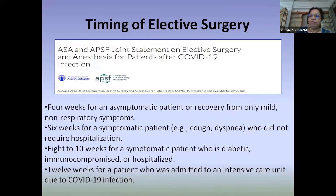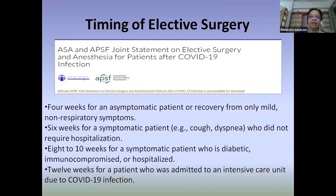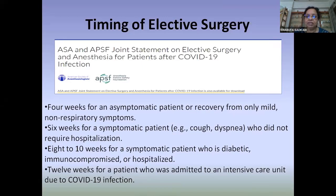There is a joint statement from ASA and the Anesthesia Patient Safety Foundation recommending a delay of four weeks for asymptomatic patients or those who recovered from only mild non-respiratory symptoms; six weeks for symptomatic patients who did not require hospitalization; eight to ten weeks for diabetic, immunocompromised, or hospitalized patients; and a 12-week delay if the patient was admitted to an ICU.